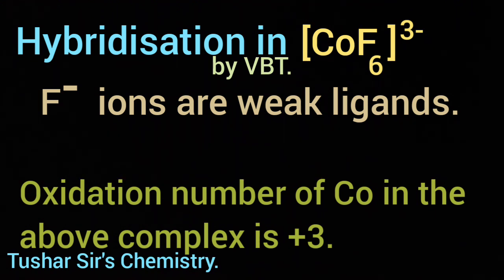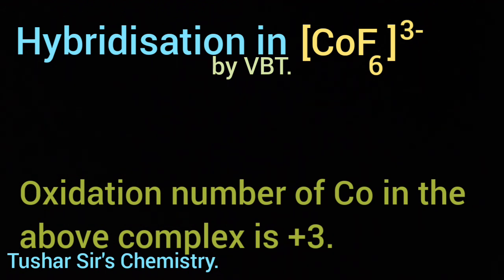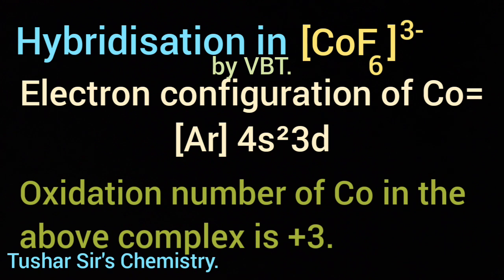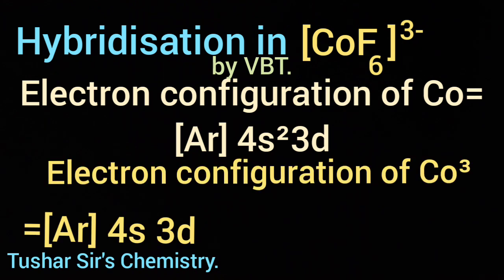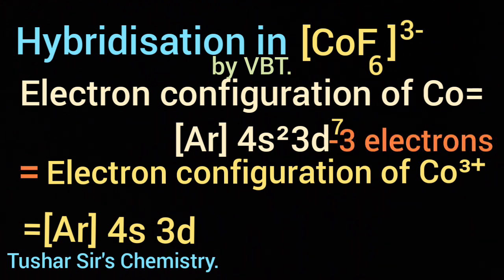Then the electron configuration of Co³⁺ will be 1s² 2s² 2p⁶ 3s² 3p⁶ 4s² 3d⁷ minus 3 electrons. It will be 4s⁰ 3d⁶.